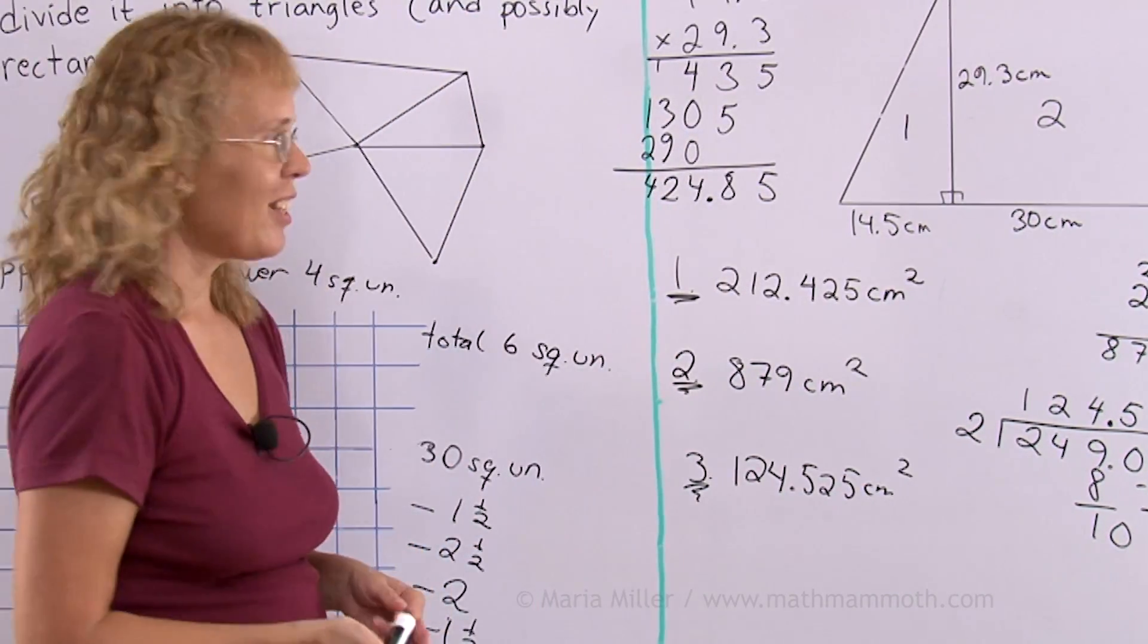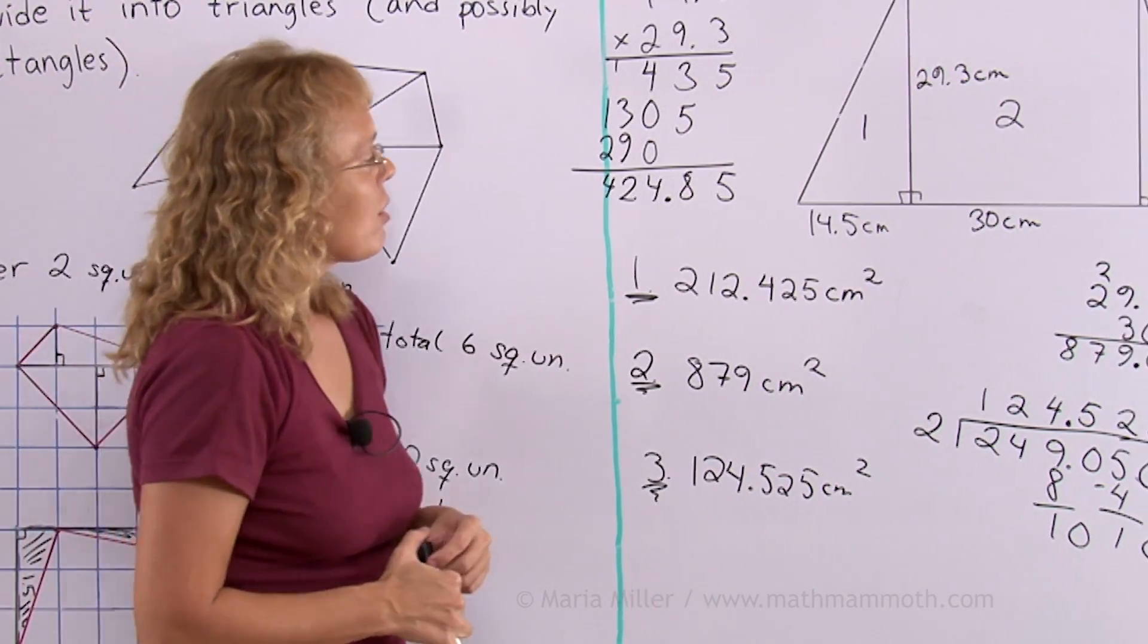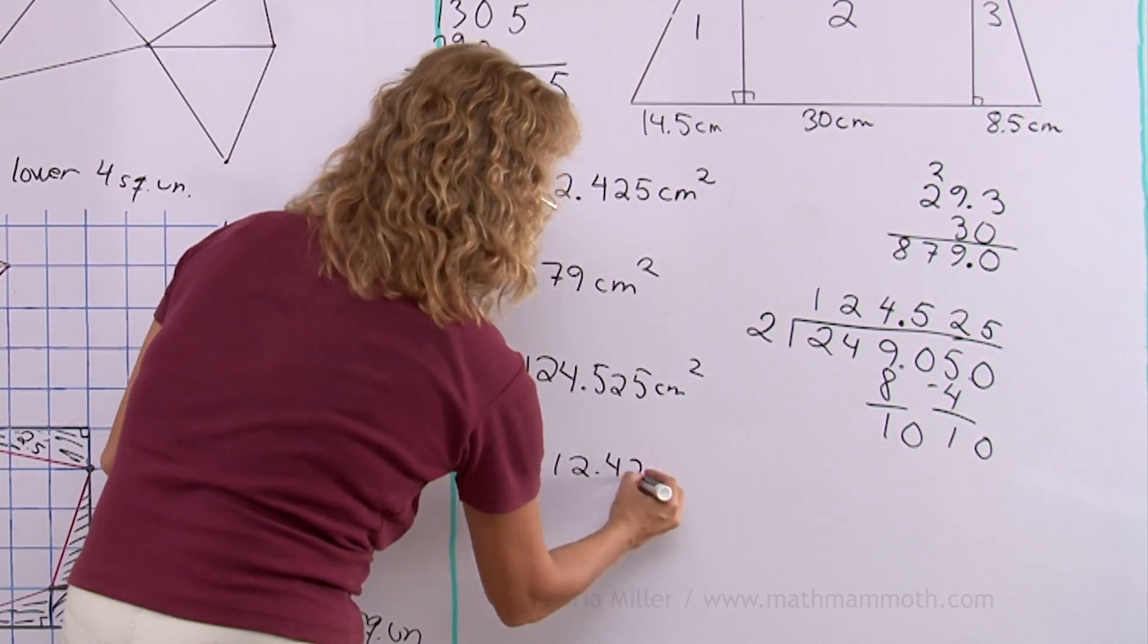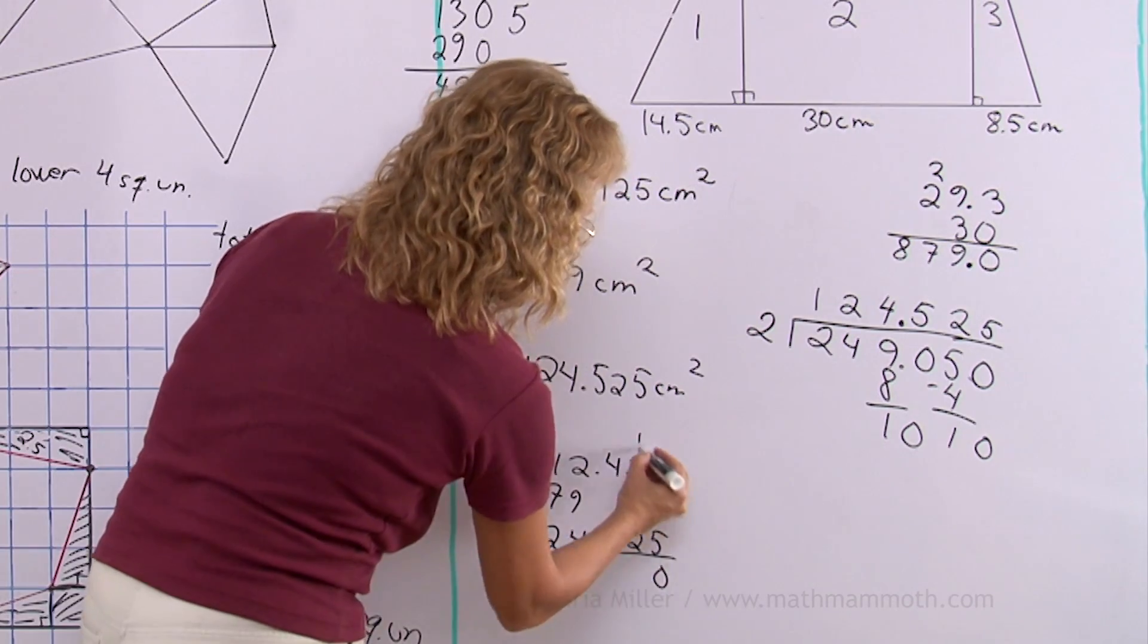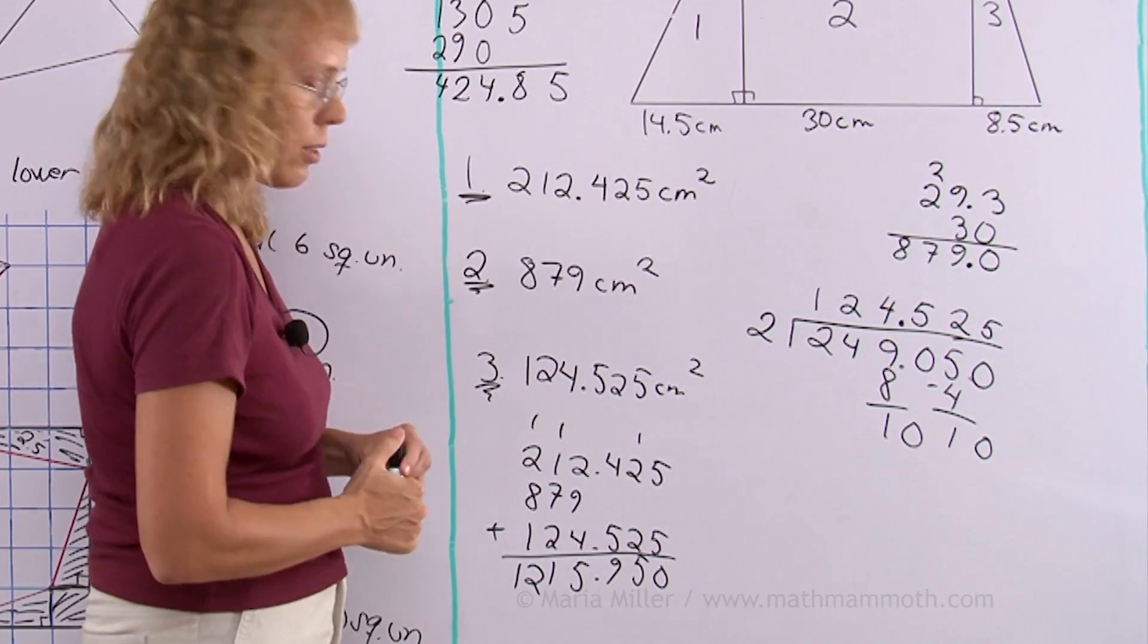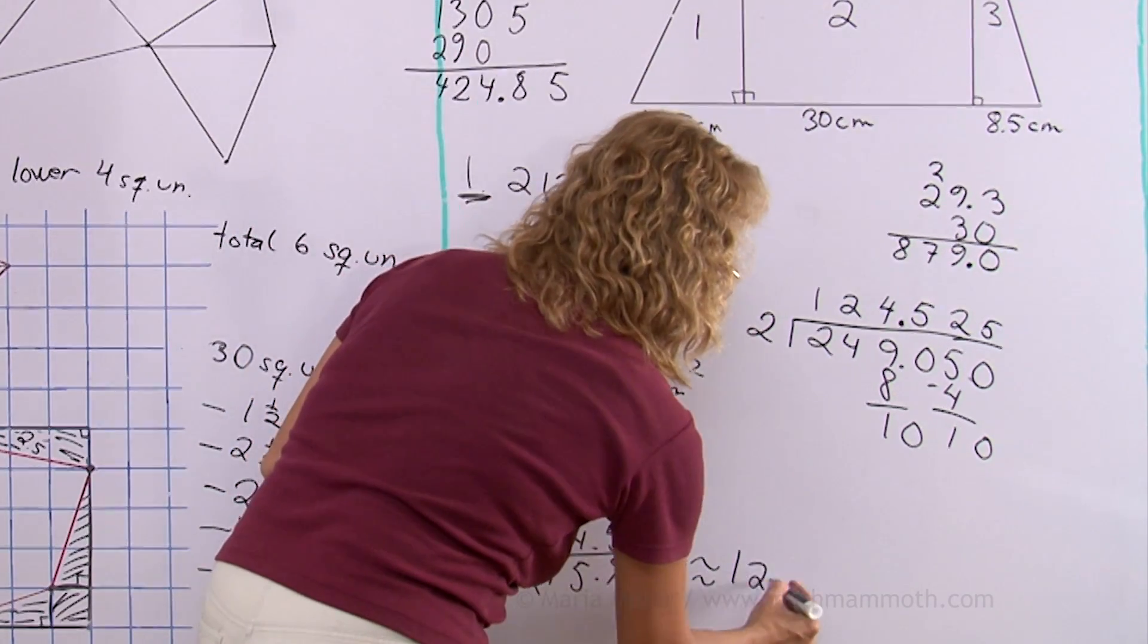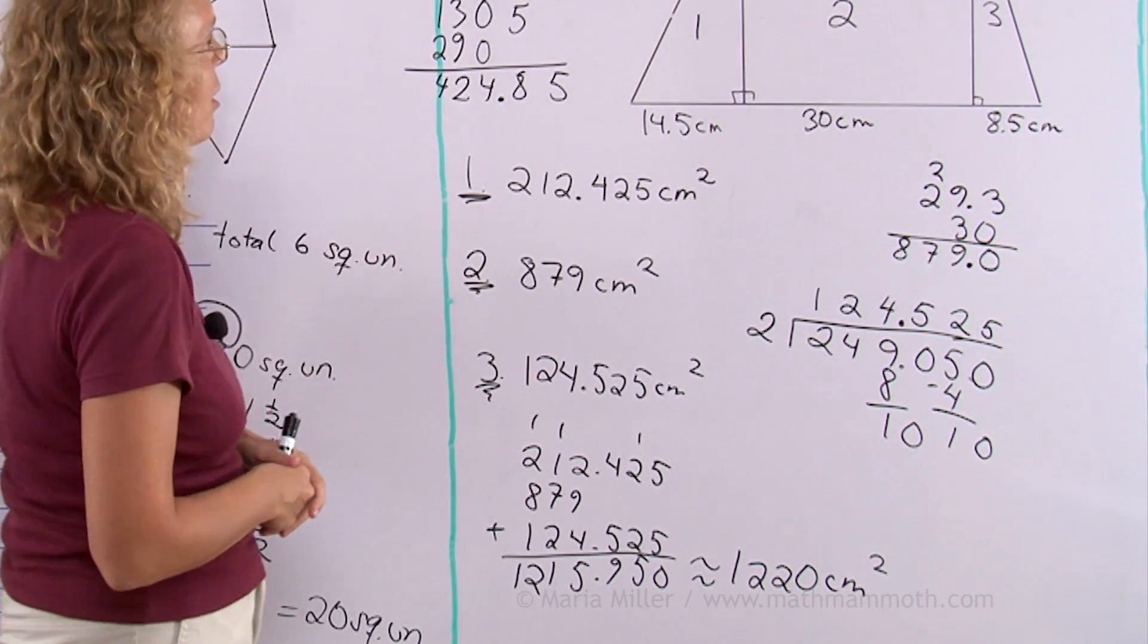124.525 square centimeters. Now we're ready to find the area of the whole trapezoid by adding those three and then rounding, probably to the nearest 10 square centimeters. Let me add now. 1215.95 square centimeters. But like I said it needs rounded. Let's round it to the nearest 10. So we will get 1220 square centimeters.